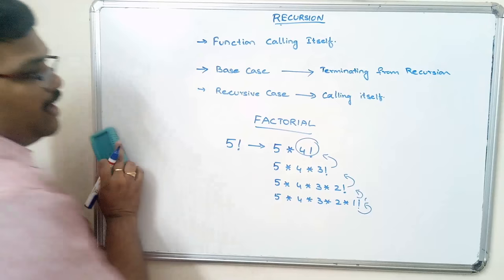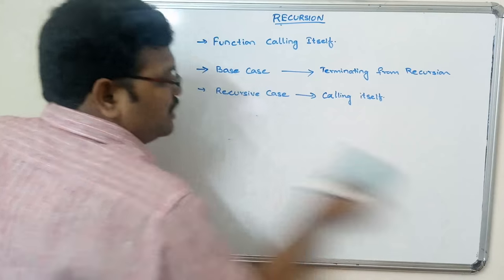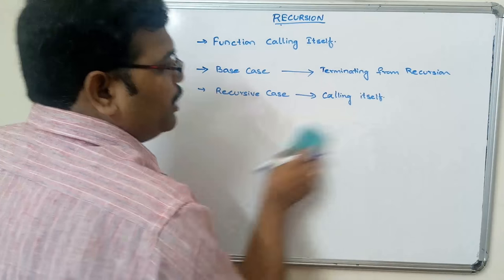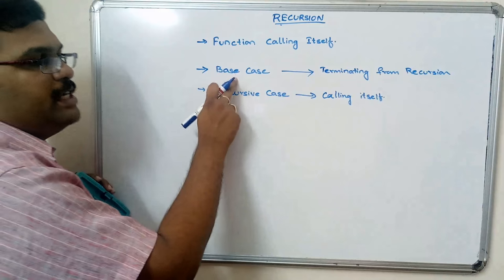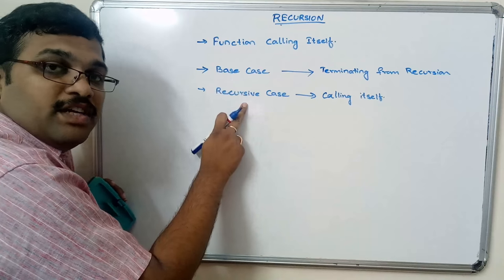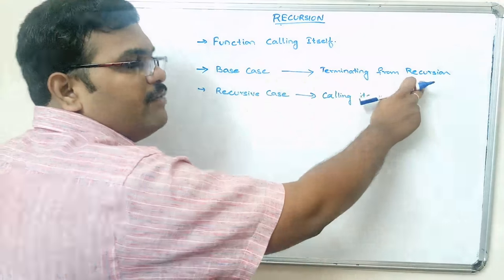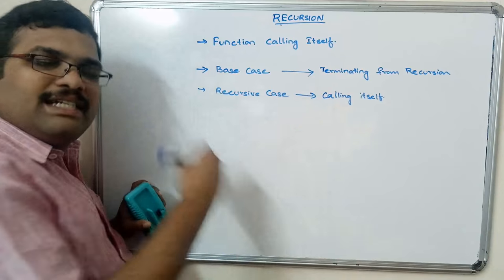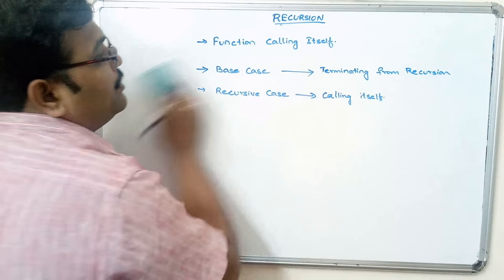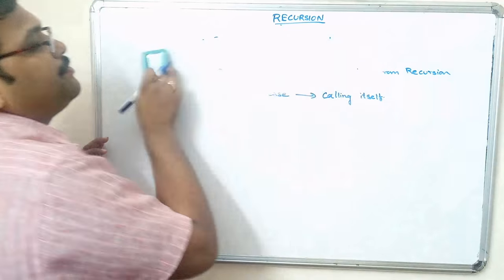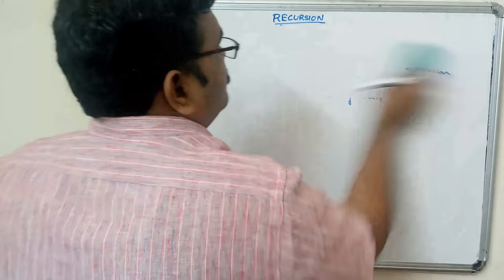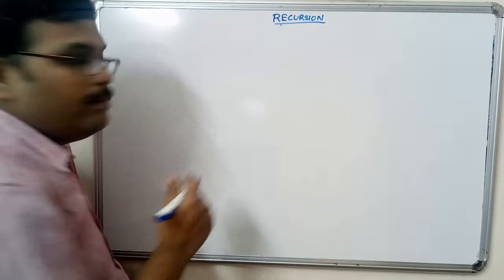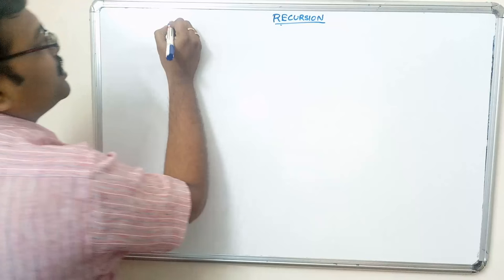The very important thing to remember is the two cases: base case and recursive case. The base case is for terminating from the recursion, and the recursive case is for calling itself. Let me write the program so that you will understand.